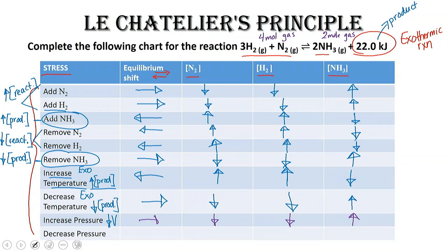If we decrease the pressure and increase the volume, the reaction vessel gets larger and any gas will fill as much volume as it can, so the reaction shifts to the side with more moles of gas. For this reaction, decreasing the pressure shifts the equilibrium to the left, increasing the concentration of reactants and decreasing the concentration of products.